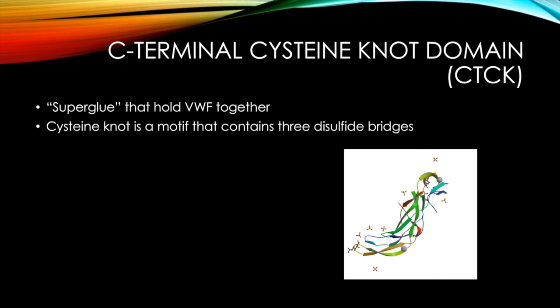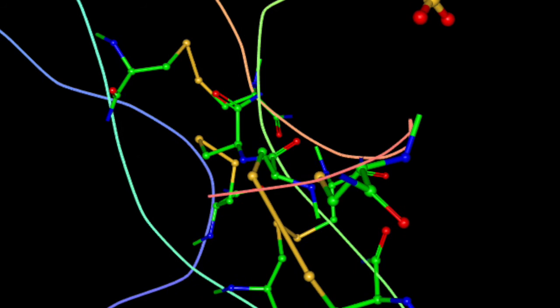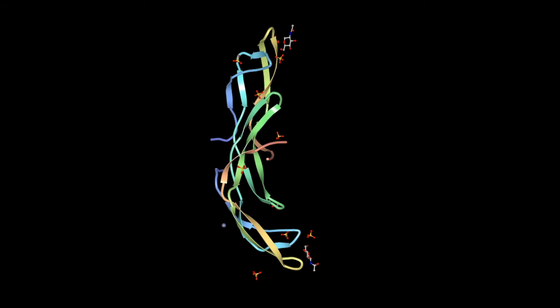So the last domain that will be mentioned is the C-terminal cysteine knot domain, or CTCK domain. A cysteine knot is a motif found in many proteins that contain three disulfide bridges formed from pairs of cysteine residues. According to the structure of von Willebrand CTCK domain, there are a total of four intra-chain disulfide bonds between cysteine residues, as represented by the bonds in yellow. Due to the strong covalent interactions from these disulfide bonds, the CTCK domain is essentially the protein superglue that holds the entire protein together.